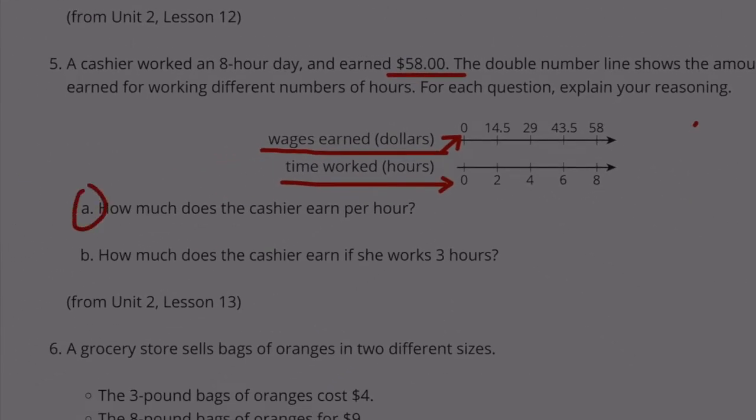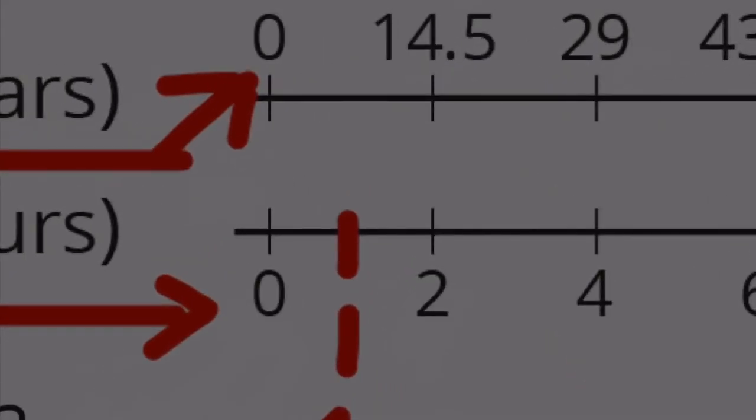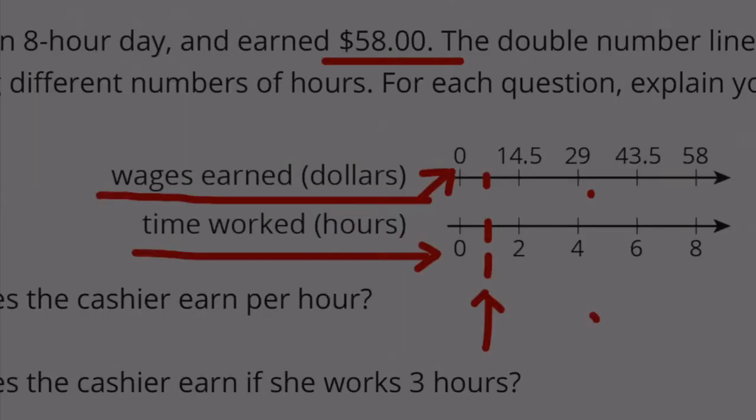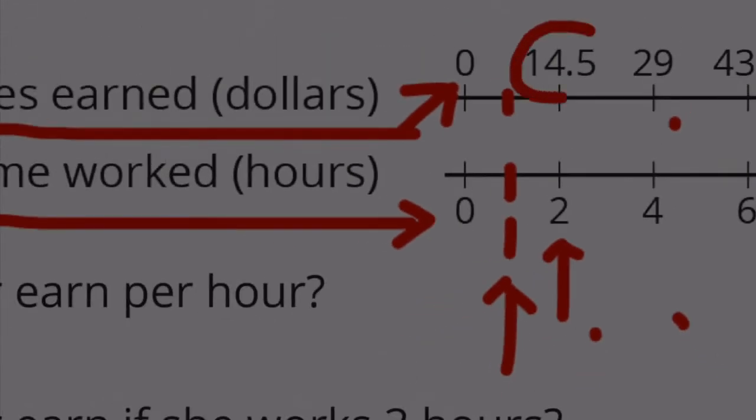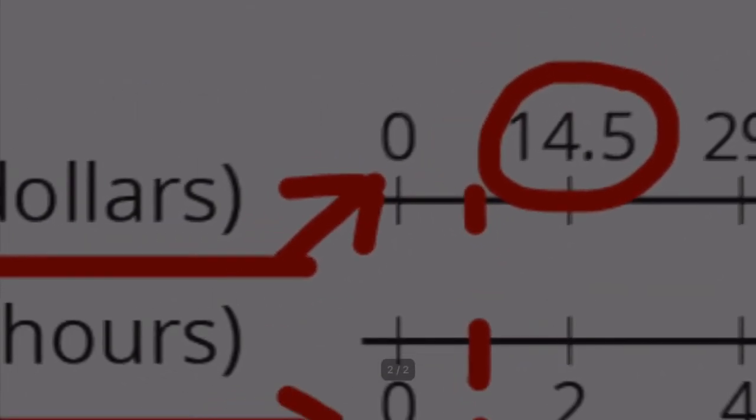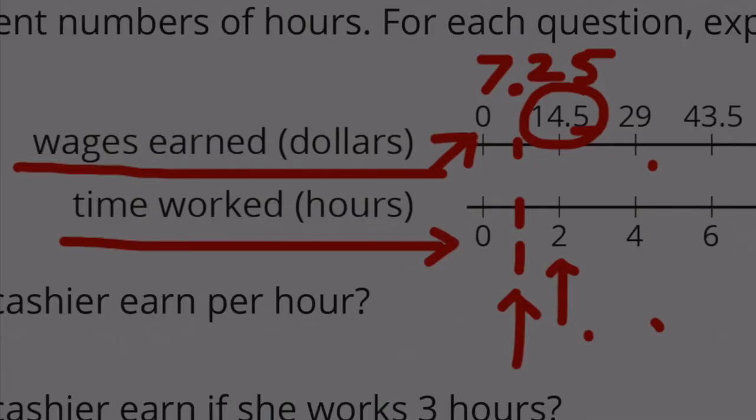A. How much does the cashier earn per hour? Well we need to figure out how much $1 an hour would be. The amount that the cashier earns in 1 hour is exactly half of the amount that the cashier earns in 2 hours. So we need to cut this number in half. Half of $14 is 7, and half of 5 dimes or 50 cents is 25 cents. So the cashier earns $7.25 in 1 hour.